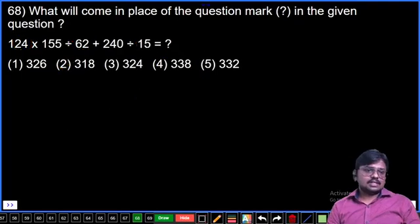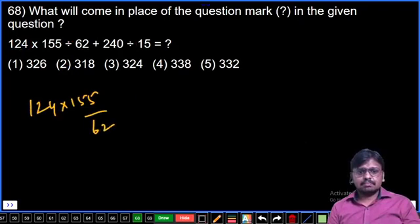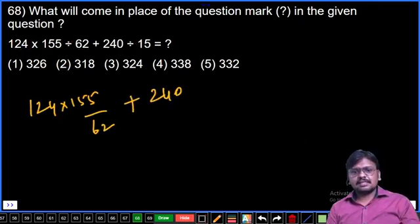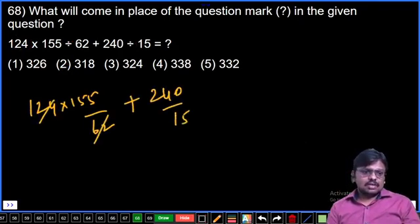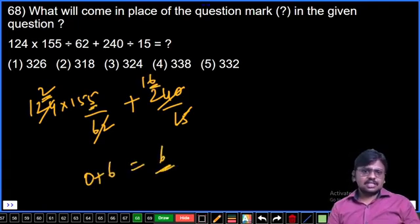Question 68: 124 into 155 by 62 plus 240 by 15. Simplify: 62 cancels to give 2, 15 cancels. 124 times 155 by 2 plus 16. Working through: 2 times 5 is 0 at the end, and the other term ends with 6. So answer must end with 6. First option: 9646.